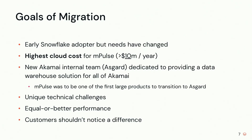A couple of years ago, we tried to evaluate where we were and where we wanted to be. If we wanted to save cost, one of the most obvious ways was to find an alternative to Snowflake. Around that time, my colleague Amir and his team had started working on an internal Spark-based data warehouse called Asgard, and we committed M-Pulse to being one of the first Akamai products to move to this internal data warehouse.